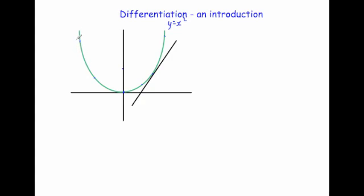At this point it's quite a large negative gradient, here it's a negative gradient, and here the gradient would actually be equal to zero — it's not changing height. Here it's positive, and here a bit more positive. The gradient of a curve is the same as the gradient of the tangent at that particular point. I've just drawn a tangent to touch the curve at that particular point.